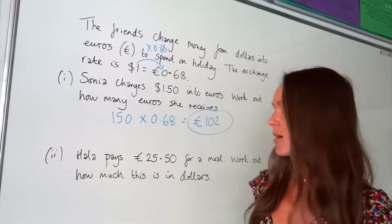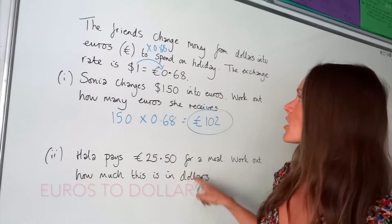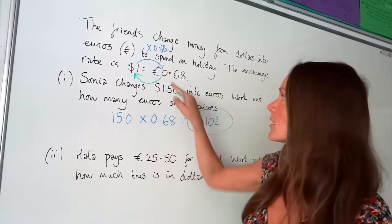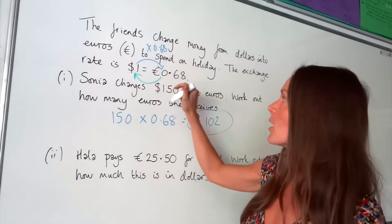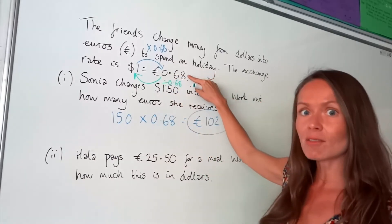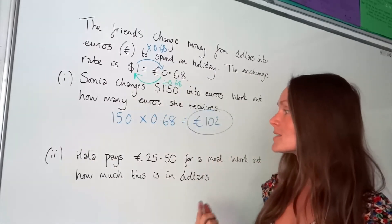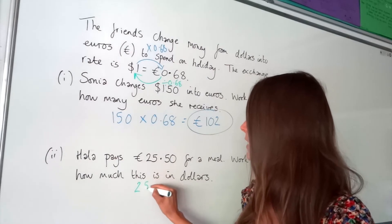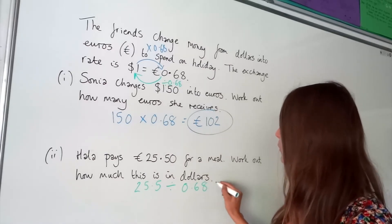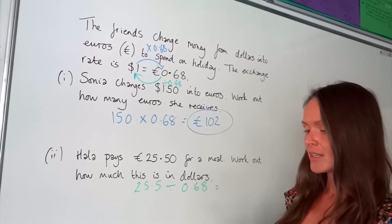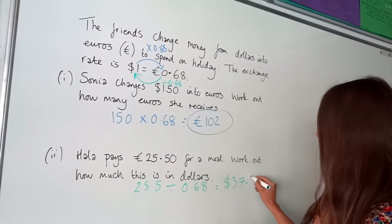In the second part of the question we're changing euros into dollars, so this time we're traveling the other way. You can probably guess: if that one was multiply, this one must be divide — which makes sense because 0.68 divided by 0.68 is 1. So I must do the same thing with those figures: divide 25.50 by 0.68. I get a decimal but that's fine — it's an exact answer, so I just write it down as it is: 37.5.